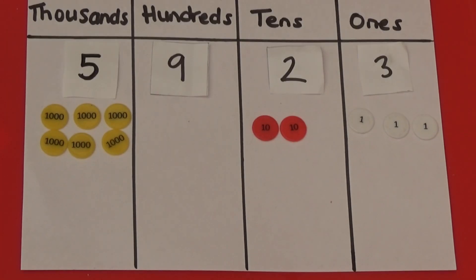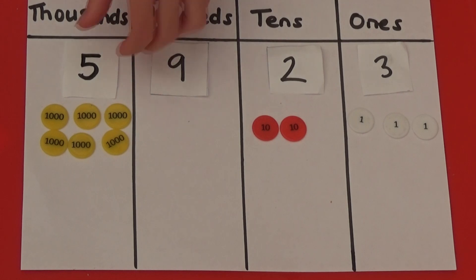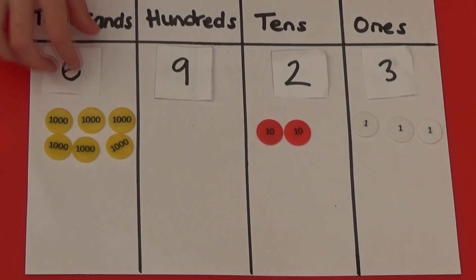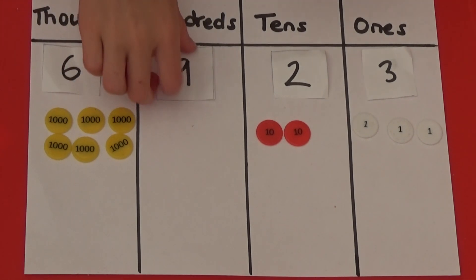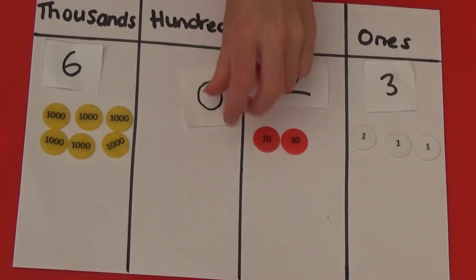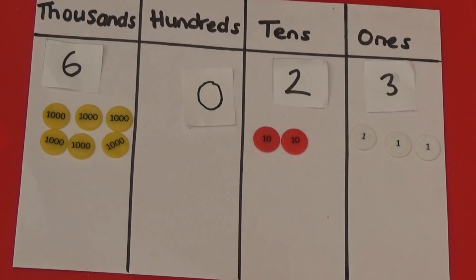We now have 6,000 and 0 hundreds, so 5,923 add 100 equals 6,023.